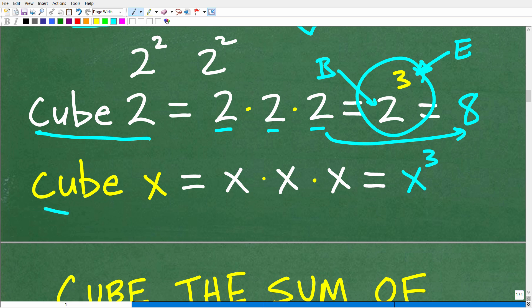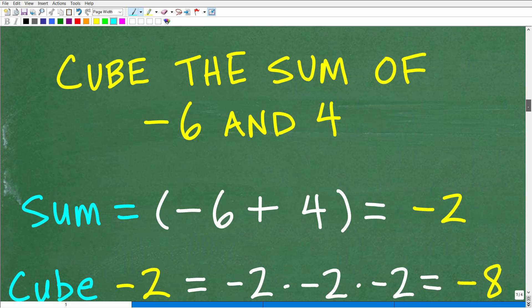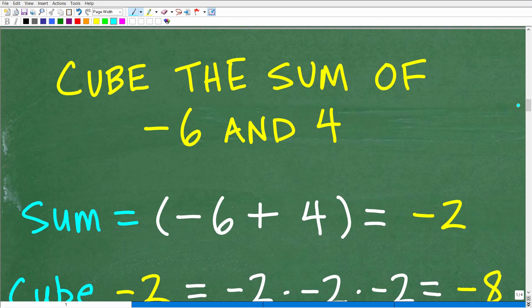Let's take a look at how this works with variables. We want to cube x. What does that mean? Well, just take x and multiply it by itself three times. x times x times x is x cubed. So hopefully now we understand cube and sum. Let's put this all together and do the problem.